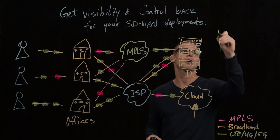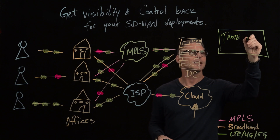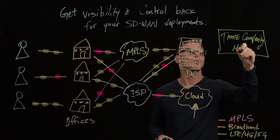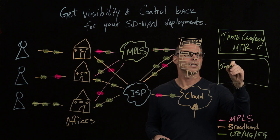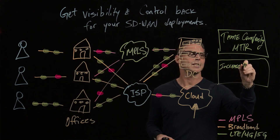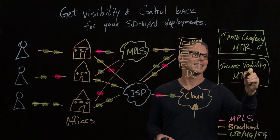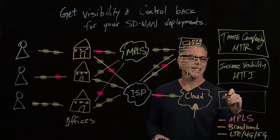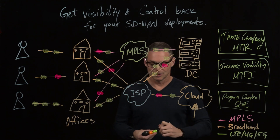And what does that do for you and your network operations teams? It helps you tame the complexity, which helps you improve your mean time to resolution. It helps you increase your visibility, which improves your mean time to innocence. And finally, it helps you regain back that control, which helps you improve the quality of experience for your end users.